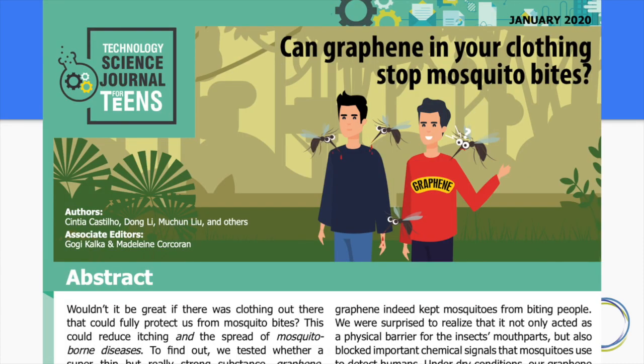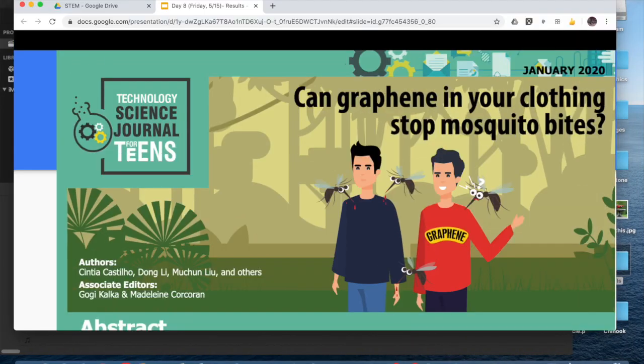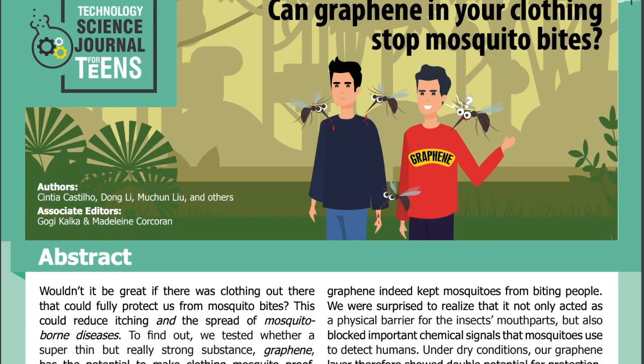Go ahead and pause the video and open up the link to this article in the Google Doc. I'm reading the article out loud with you. And as we go through it together, keep an eye out for the different components that you need to include in your paper. This is real research that came out in January 2020. The title is: Can Graphene in Your Clothing Stop Mosquito Bites? And the authors are listed below.